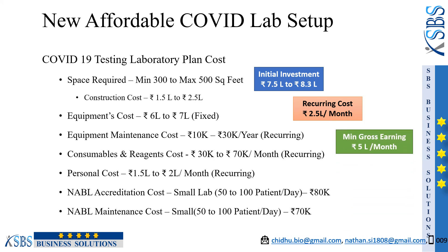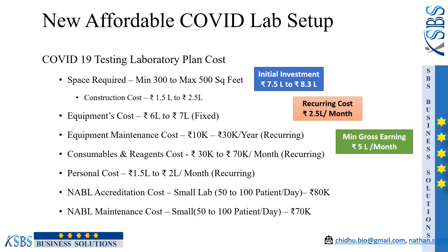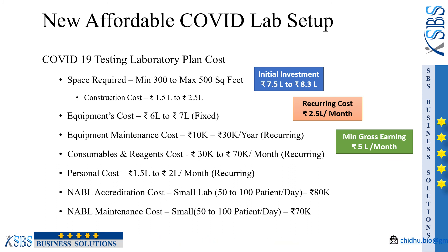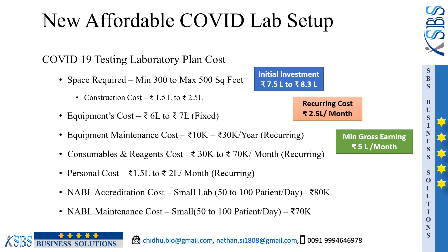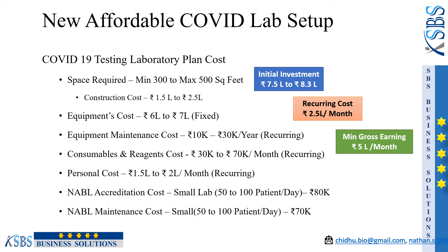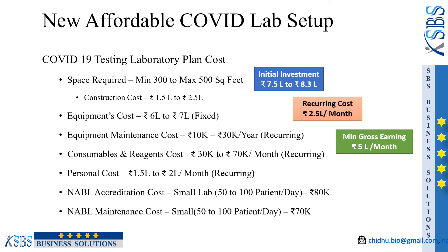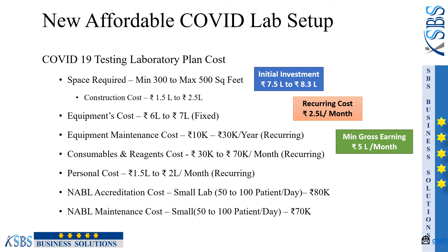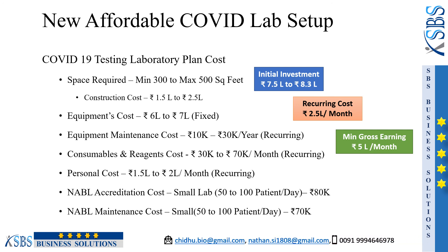The minimum gross earning: once a Covid lab is set up, you will have an approximate earning of 5 lakhs per month if you're running a sample volume of 50 to 100 per day. The approximate cost depends on the price fixed for the RT-PCR test, which is 3,000. Private labs are also following some at 3,000 and some are following different prices like 3,000 to 4,000.